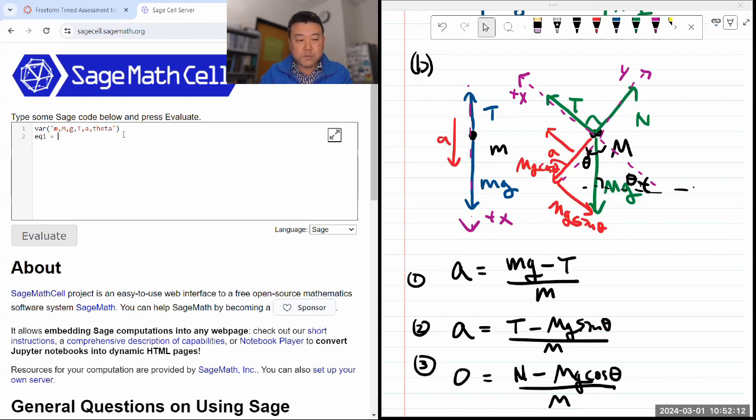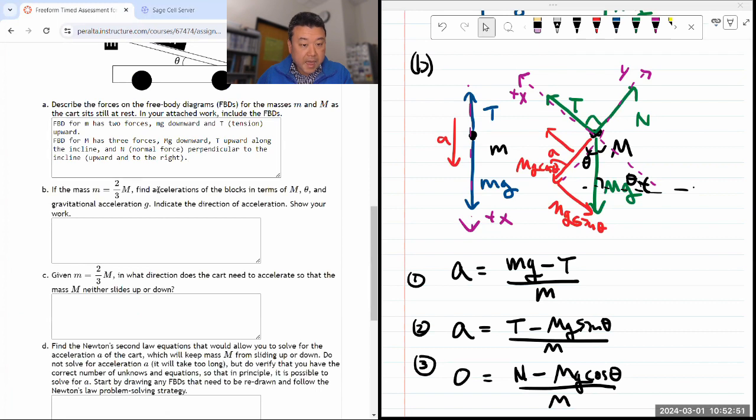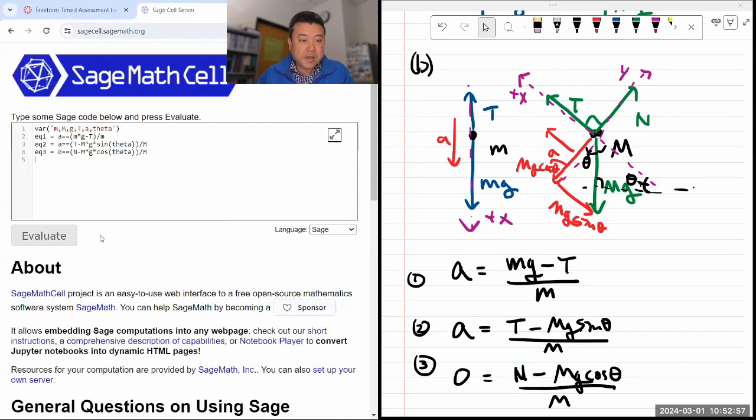Those are all my symbols. My equation one is going to be acceleration is equal to m times g minus t divided by small m. Equation two is going to be acceleration is equal to t minus M times g times sine theta. And because we're not solving for theta, I think we'll be fine. Divide by big M. Equation three is equal to zero is equal to n minus M times g times cos theta divided by M.